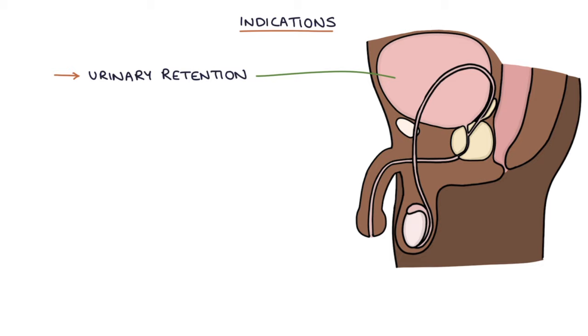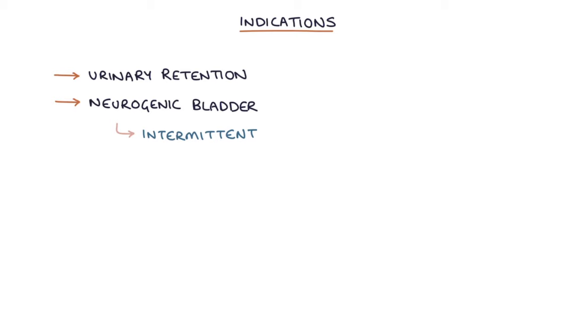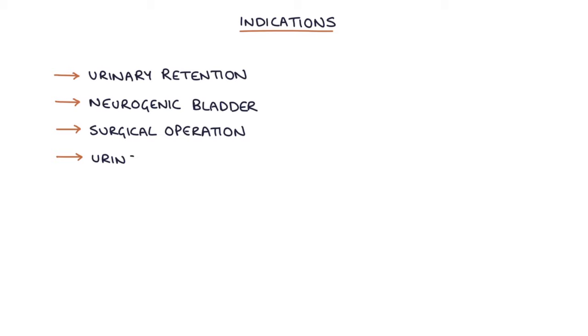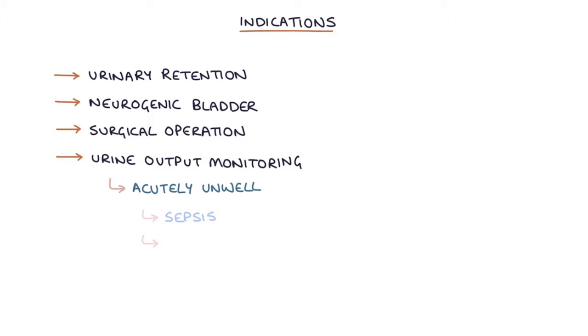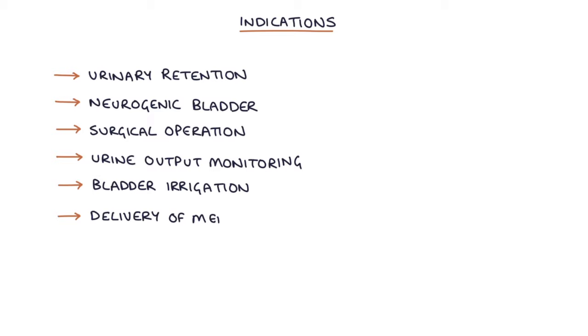The reasons for inserting a urinary catheter include urinary retention due to a lower urinary tract obstruction, for example an enlarged prostate gland. Neurogenic bladder, for example intermittent self-catheterization in patients with multiple sclerosis. Around the time of a surgical operation. When patients need their urinary output monitoring, for example when acutely unwell with sepsis or in the intensive care unit. For bladder irrigation, for example to wash out blood clots, and for delivery of medications such as chemotherapy to treat bladder cancer.